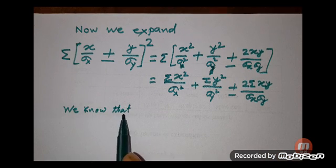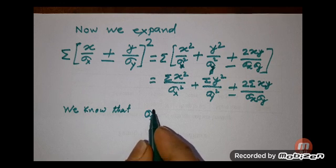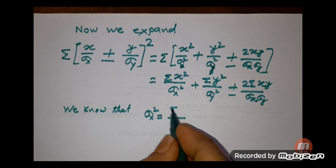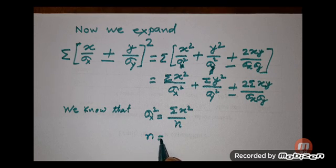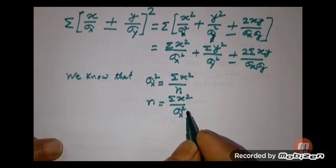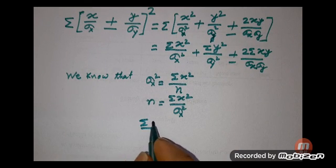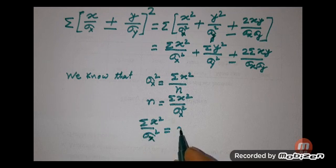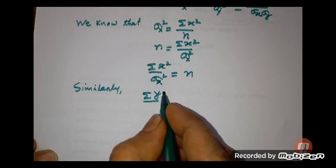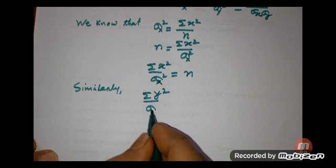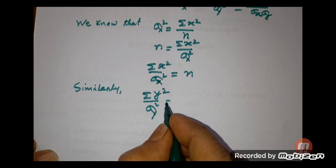We know that variance of x equals summation of small x² divided by n, where n is the number of observations. Therefore, summation x² divided by variance of x equals n. Similarly, summation y² divided by variance of y also equals n.